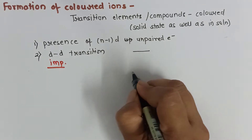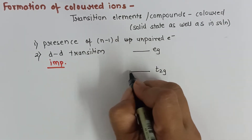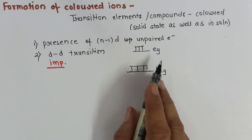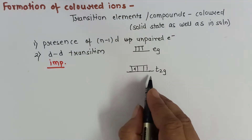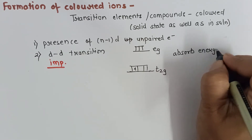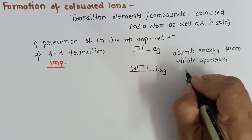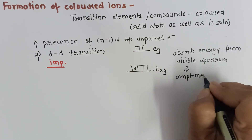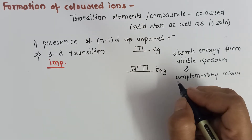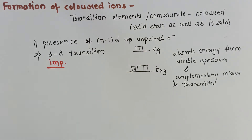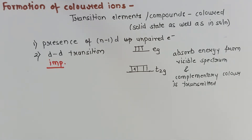In the coordination chapter we have seen that there are two sets of energy: eg and t2g. Due to the approach of ligands, d orbitals lose their degeneracy and get distributed into two sets, t2g and eg. If there is any unpaired electron in t2g, it will absorb energy from VIBGYOR or from the visible spectrum, and the complementary color will be emitted. For example, if a transition element absorbs blue color, the complementary color orange will be transmitted.